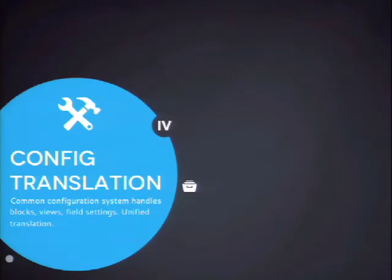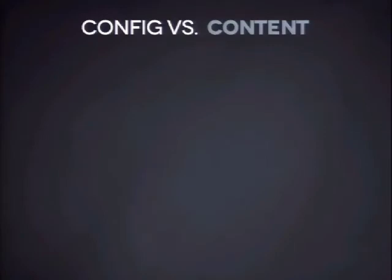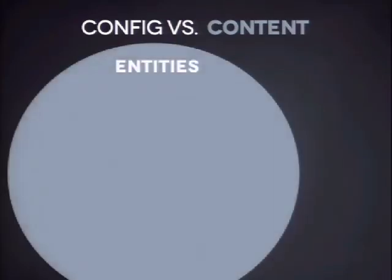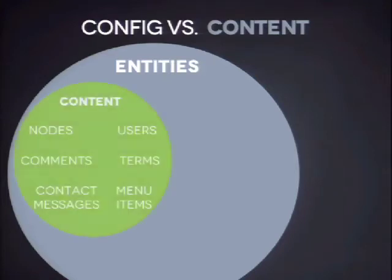I want to explain briefly what config and content is in Drupal 8, because it might not be clear. The unfortunate truth is that as long as we have separate modules and UIs, we'll need to explain this to users, which is not ideal. They shouldn't need to understand this, but we'll see whether we can improve the UX to the point it doesn't need explaining. In Drupal 8 there are two kinds of entities in core. What I've been talking about so far was content entities: nodes, comments, contact messages, menu items, terms, users, etc. You can usually identify these because you can put configurable fields on them.